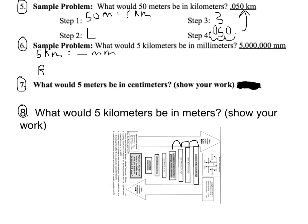We have to see how many spots. We started up here. One, two, three, four, five, six spots to go from kilometers to millimeters.